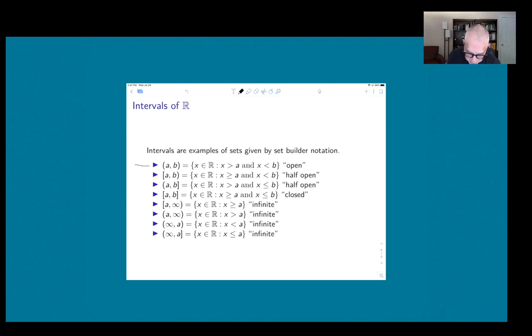But for instance, let's look at the very first one. So this says that writing (a, b) with parentheses is equal to the set of real numbers which are bigger than a and less than b.